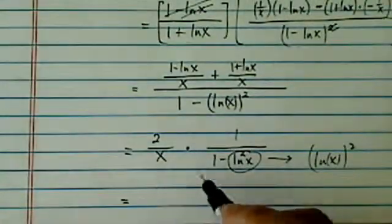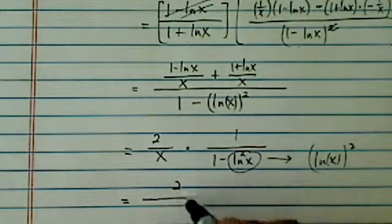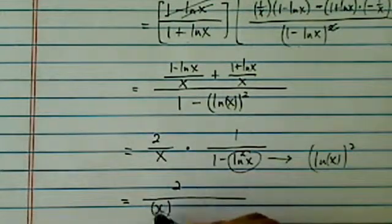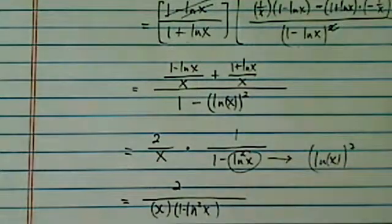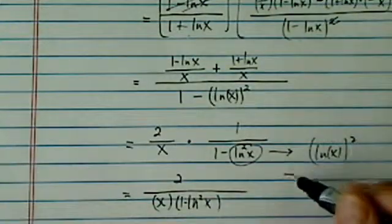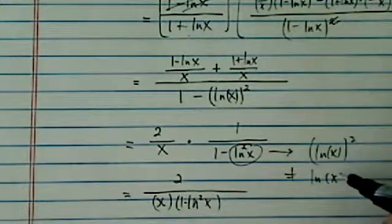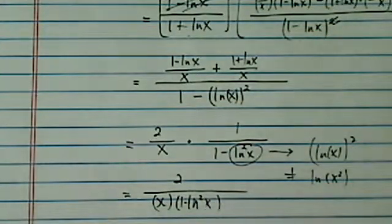So let's do it one more time and clean it up. 2 over x times 1 minus natural log squared of x. Now this one does not equal to natural log of x squared. So pay attention there.